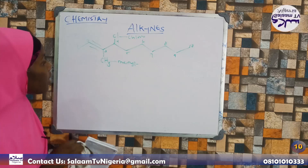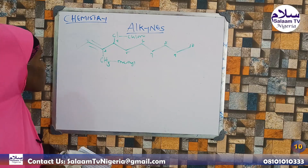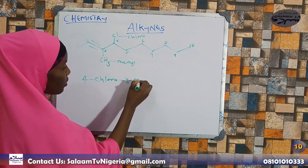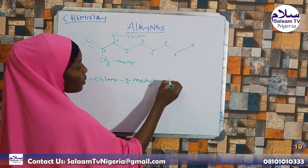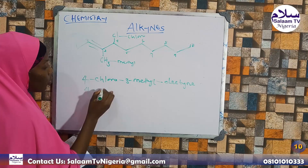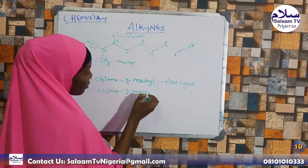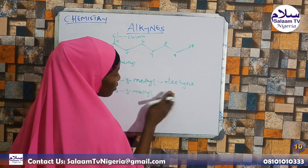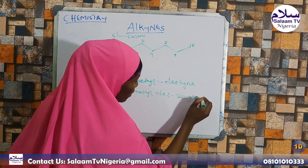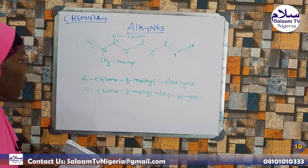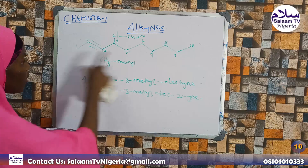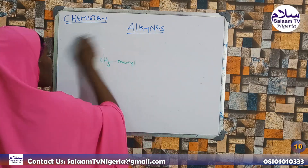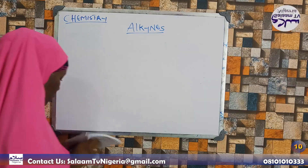So considering the substituents: we have chloro and a second substituent. The alphabetical order rule applies. In this ring compound, we identify the position of the triple bond. Position 2 has the triple bond. The full name for this example is deca-2-yne with substituents arranged in alphabetical order.